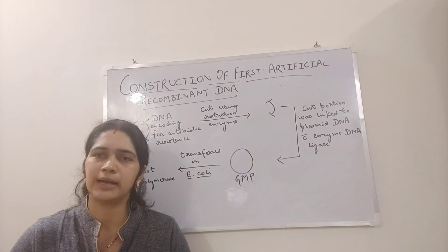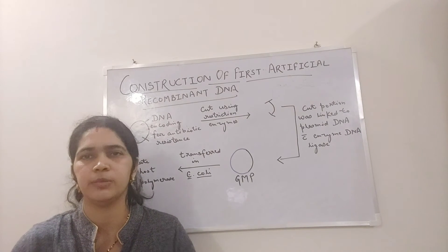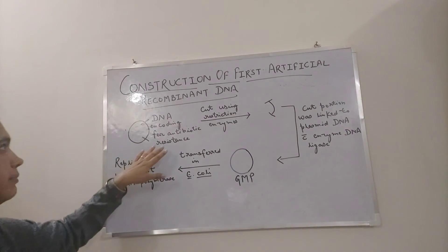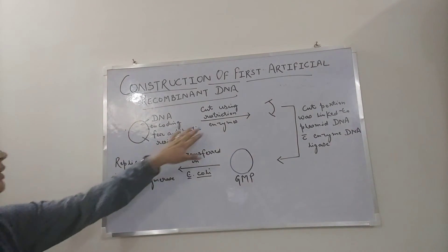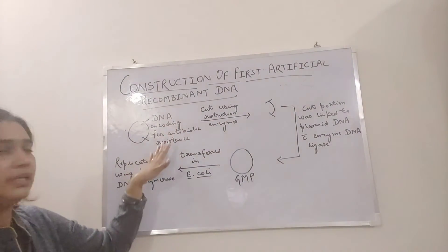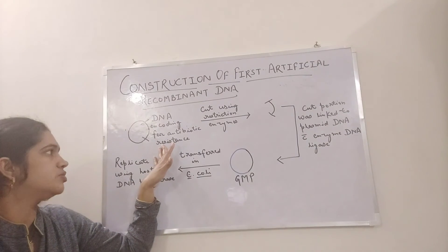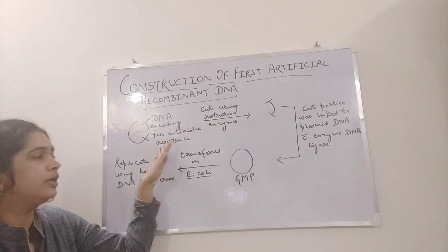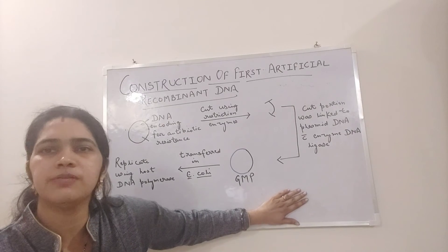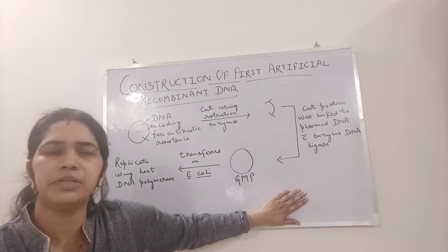Here you can see in the diagram that with the help of a restriction enzyme, a portion of the DNA that encodes for the antibiotic resistance gene was cut out. This cut portion was then linked with the native plasmid of Salmonella typhimurium with the help of the DNA ligase enzyme.